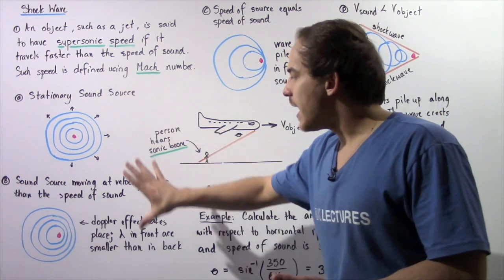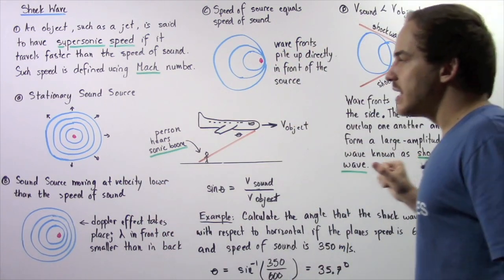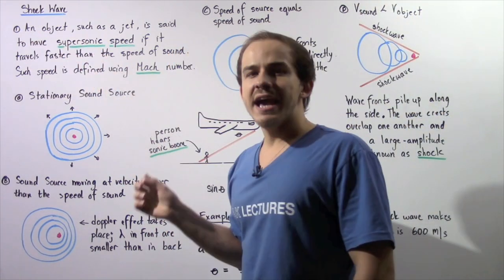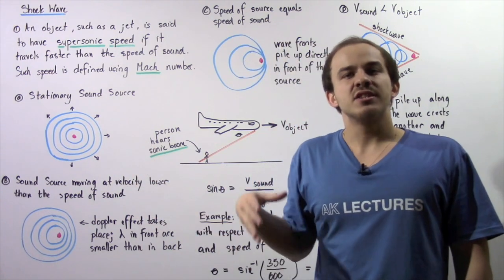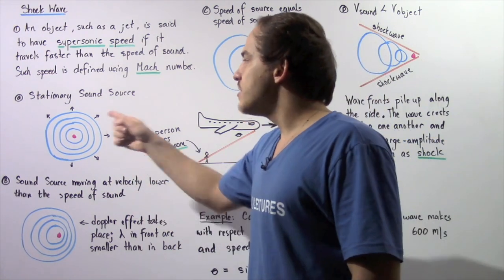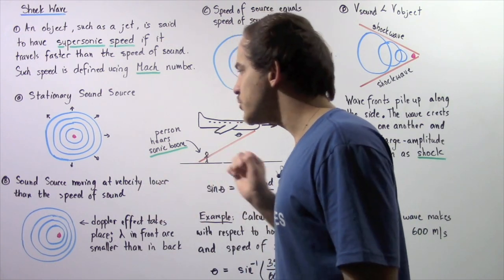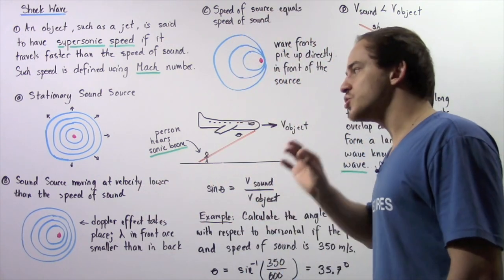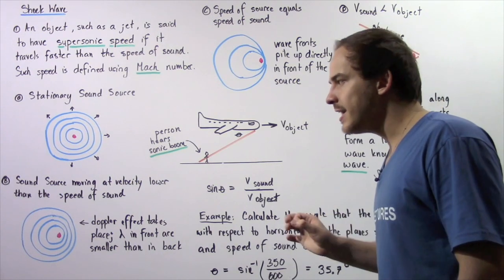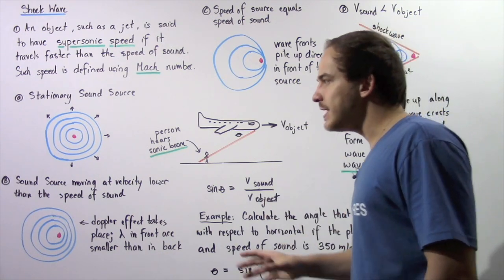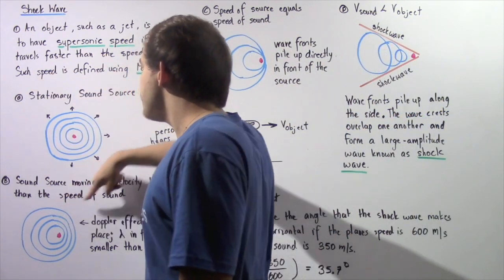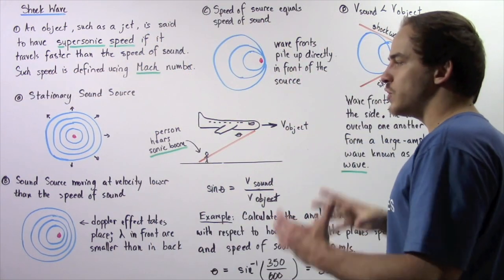So, let's look at the following four cases. Let's suppose that in case A, we have a sound source that is creating the sound that is stationary. So if the sound source is stationary, an observer who is also stationary will hear the same exact frequency